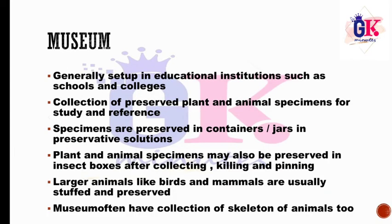Next taxonomical aid is Museum — generally set up in educational institutions such as schools and colleges. It is a collection of preserved plant and animal specimens for study and reference. Specimens may be preserved in special glass containers with solutions. The plant and animal specimens may also be preserved in insect boxes after collecting, killing, and pinning. Birds and mammals may be preserved as mounted organs, and animals may also be preserved as skeletons.